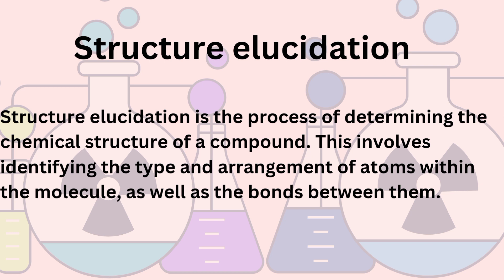Structure elucidation typically involves a combination of analytical techniques, such as spectroscopy, chromatography, and mass spectrometry. These techniques provide information about the physical and chemical properties of the compound, which can be used to deduce its structure.